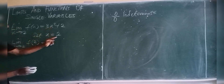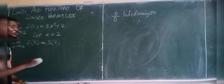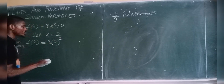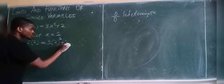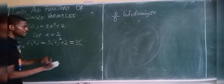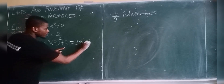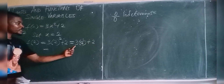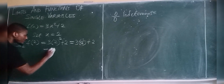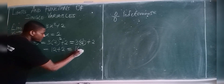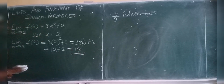We put in x = 2, giving us 3 times 2 squared plus 2. Now 2 squared is 4, so this becomes 3 times 4, which is 12, plus 2. Therefore the limit of that function is simply 14.